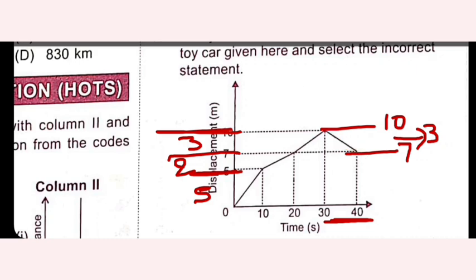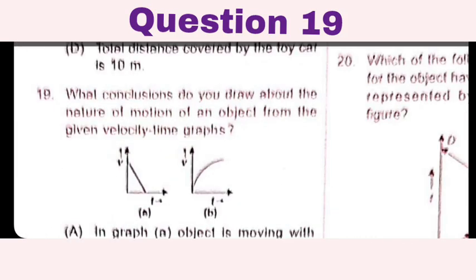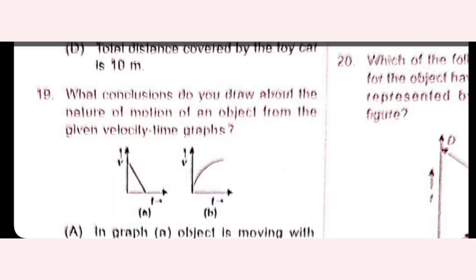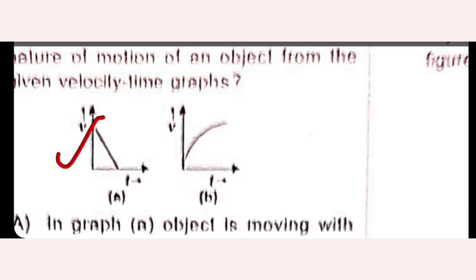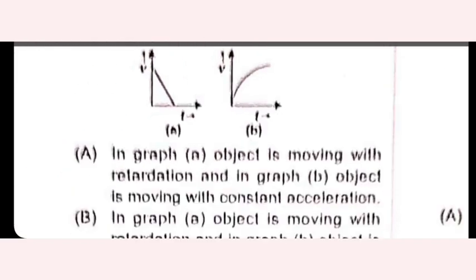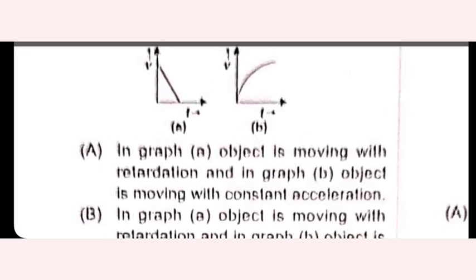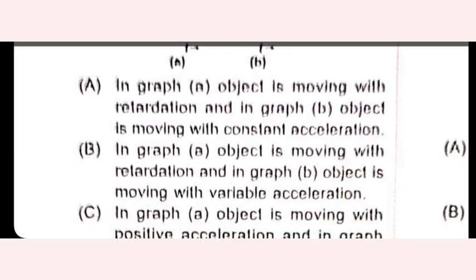From the velocity-time graphs given: in graph A the velocity is decreasing, so the object is moving with retardation. In graph B, the velocity change is non-uniform, meaning variable acceleration. The correct statement is: in graph A object moves with retardation, and in graph B object moves with variable acceleration. Option B is the right answer.